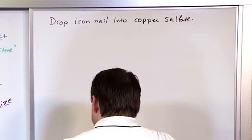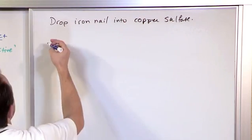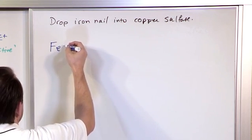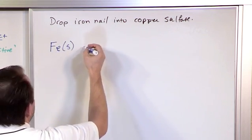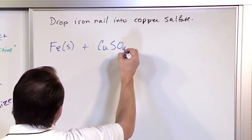So we want to figure out is this reaction going to happen or isn't it going to happen? So you need to translate the words to a reaction. So an iron nail, let's just pretend it's pure iron, that's a solid and we're dropping it into copper sulfate. You should realize that that's CuSO4.